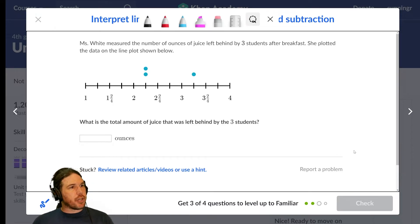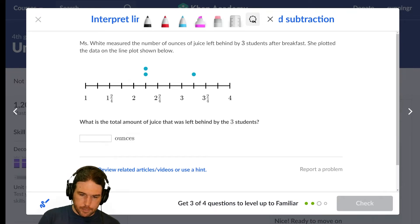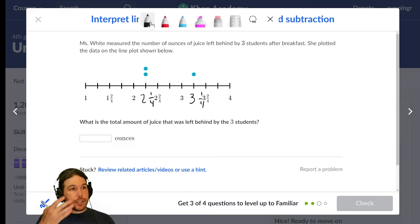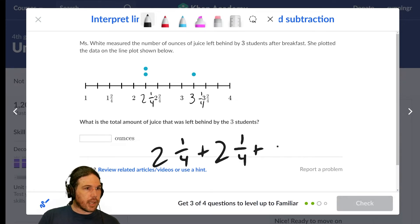Ms. White measured the number of ounces of juice left behind by three students after breakfast. Why she did that, I have no idea. She plotted the data on the line plot shown below. What was the total amount of juice left behind by the three students? Now, it looks to me like each of these tick marks is one-fourth. We've got one, one and one-fourth, one and two-fourths, three-fourths, one and four-fourths would indeed be two. So this one here is actually two and one-fourth. And then this tick mark here is three and one-fourth.